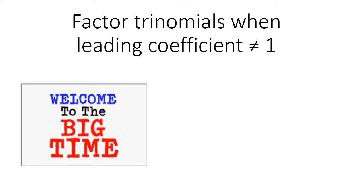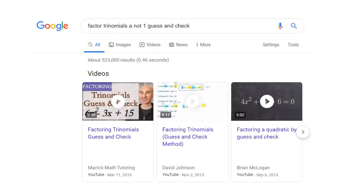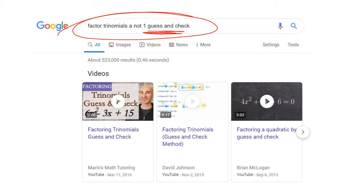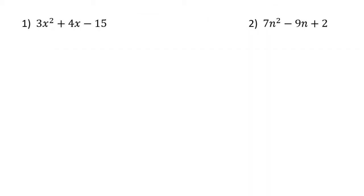This video is going to help you with more difficult factoring trinomials where the leading coefficient is not equal to one. So it won't be something like x squared minus 3x minus 18 — the leading coefficient is this number right here. It's a little bit more difficult. Before we start, if you do a Google search and click on videos for extra help, make sure you type in 'guess and check.' You might see other techniques that are helpful, and you have plenty of resources out there for factoring.